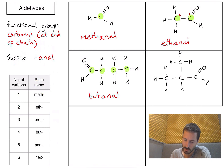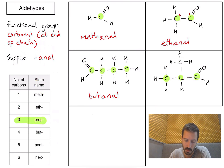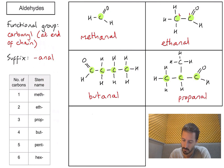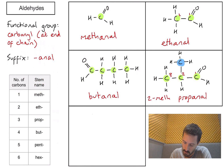Fourth example: something slightly different. First, let's find the longest carbon chain, which should include the functional group — carbon one, two, three. That's three carbons in a straight line. With three carbons in the main chain, the stem is 'prop', and the suffix is '-al'. On the second carbon there's a methyl group sticking off the side, so we need to include that substituent, giving us 2-methylpropanal.